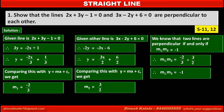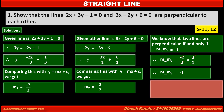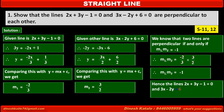Thus, the product of slopes of these two given lines is equal to minus 1. Hence, the lines 2x plus 3y minus 1 is equal to 0 and 3x minus 2y plus 6 is equal to 0 are perpendicular to each other.